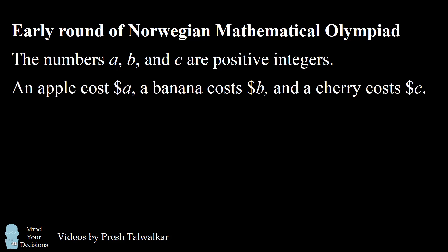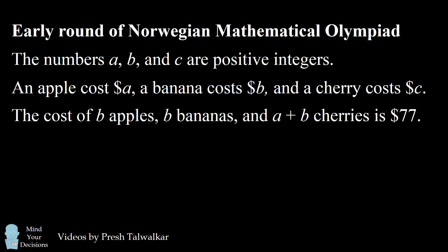An apple cost A dollars, a banana costs B dollars, and a cherry costs C dollars. The cost of B apples, B bananas, and A plus B cherries is 77 dollars.